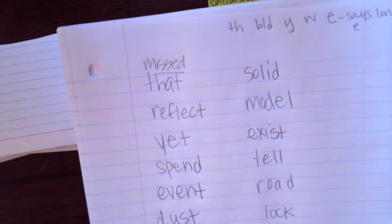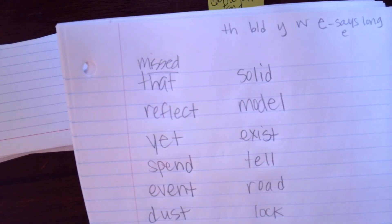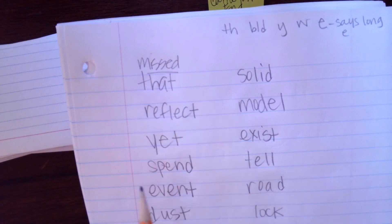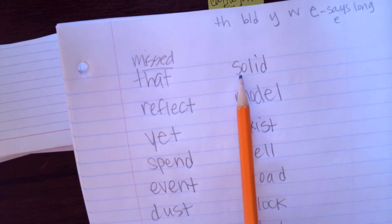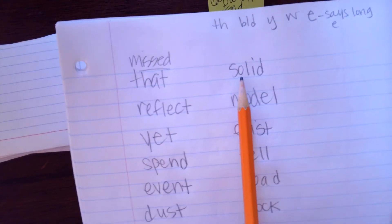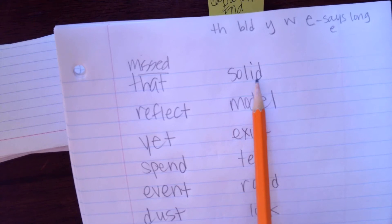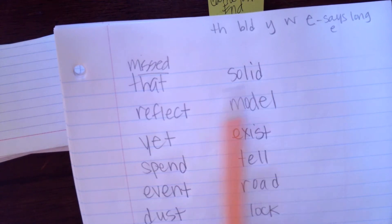TH makes th. That. No blend: sol, l, id — solid.